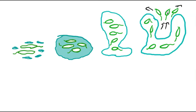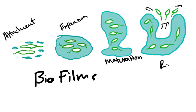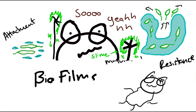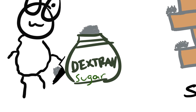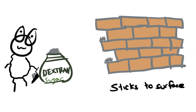They form biofilms through a chemical process called quorum sensing, where bacteria coordinate to produce slime for survival. Another virulence factor is dextran, which is an insoluble sugar. Dextran allows the bacteria to stick onto surfaces — this is a major problem because it allows them to attach to platelet-fibrin aggregates and stick onto the valves of the heart, enabling them to cause endocarditis.